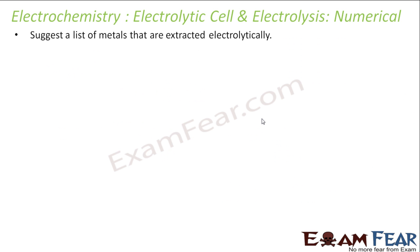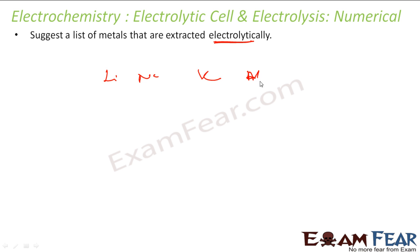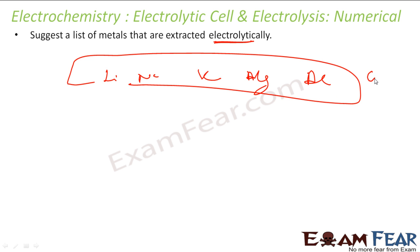The next question: suggest a list of metals that are extracted electrolytically. Lithium, sodium, potassium, magnesium, aluminium, and copper are the metals extracted electrolytically. Why? Because it is difficult to reduce them using a chemical process, so an electrical process is used to reduce them.